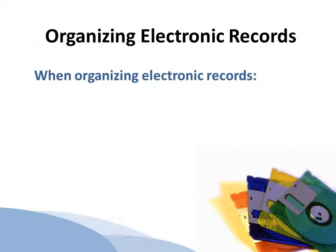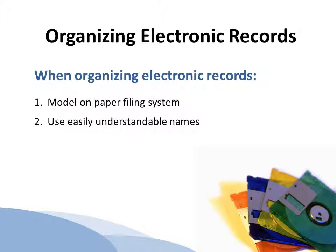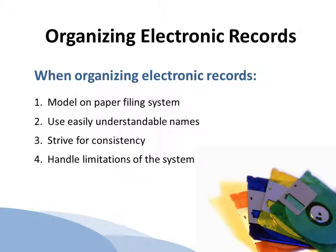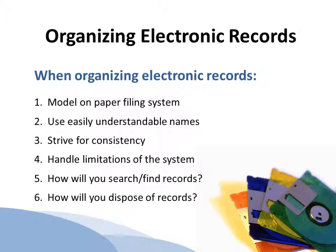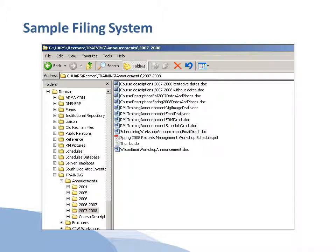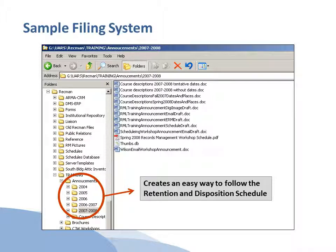Electronic records need to be organized. One simple way is to organize your files after a paper filing system. Be sure to use clear and easily understandable names for your records, and maintain consistency in naming conventions. Be sure to account for the limitations of your system — for example, some programs won't allow particular characters in file names. Also consider how you will search for your records and how you plan to dispose of them. When creating your electronic filing system, make clear directories and subdirectories organized by date, which eases the burden of following the retention and disposition schedule since retention periods are usually date specific.